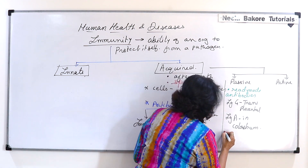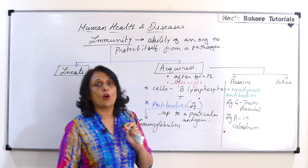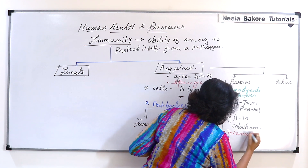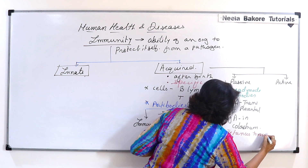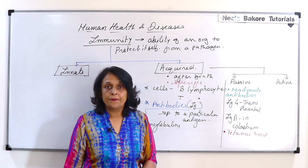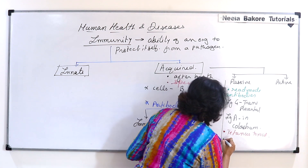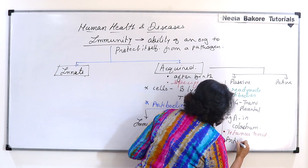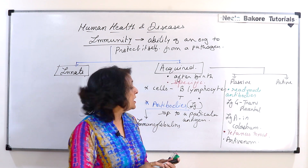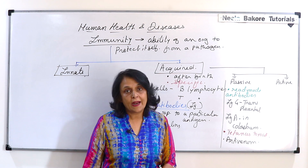There is one more example. We get a tetanus toxoid injection, which actually provides ready-made antibodies to us. Similarly, antivenom — which is given against snake bite — also contains ready-made antibodies.